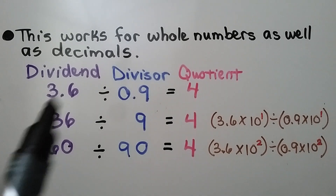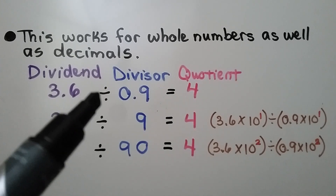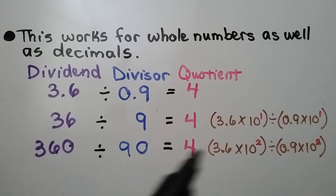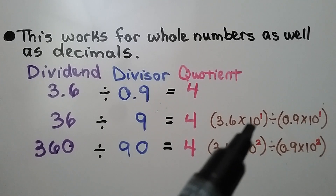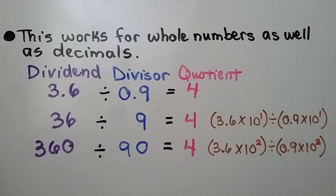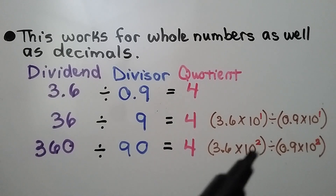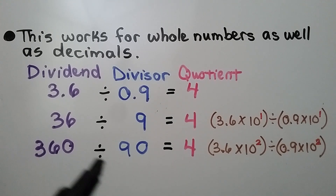We have our dividend, our divisor, and our quotient. If our dividend is 3 and 6 tenths and we divide it by 9 tenths, it's equal to 4. If we multiply the dividend and the divisor by a power of 10 — that would be times 10 — we have 36 divided by 9, which equals 4. And if we multiply both by 10 to the second power, that would be 100, we have 360 divided by 90, which equals 4.